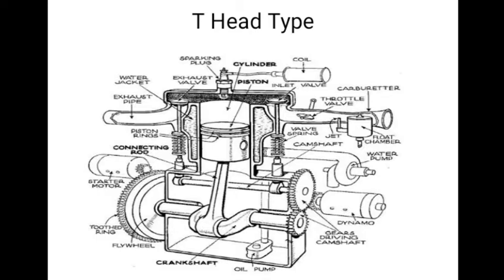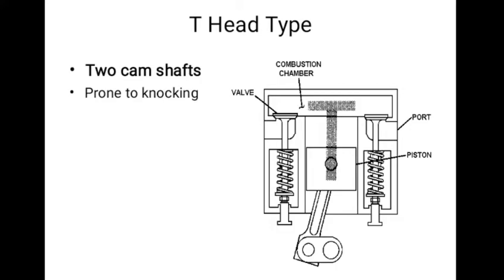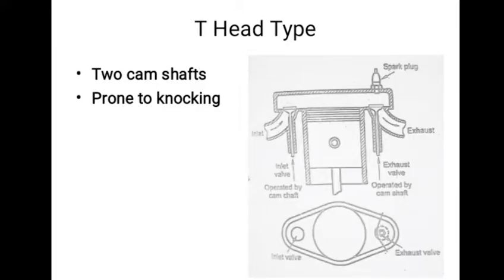The T-head type of combustion chamber was used earlier by Ford Motor Corporation. This design suffered from the following disadvantages: it requires two camshafts, and it was prone to knocking as the flame path was considerably long. The knocking was detected even at compression ratio of 4 and fuel octane number of 50.